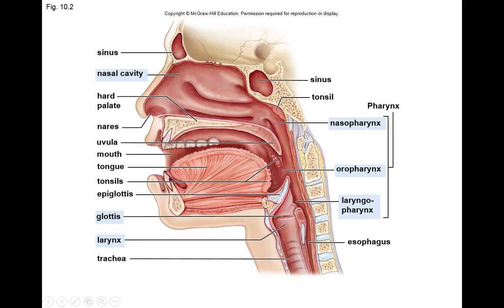The cilia in the trachea beat the mucus upward toward the larynx. Every now and then you feel the urge to clear your throat, which moves that mucus up into the pharynx to be swallowed down. So cilia in the airways beat upward and cilia in the nasal cavity beat backward, all directing that mucus with trapped particles into the pharynx and down into the esophagus.